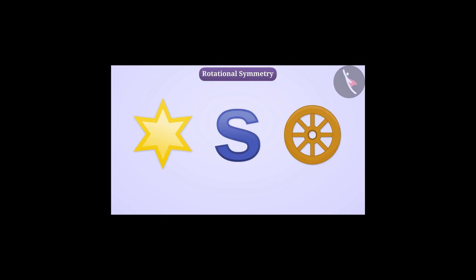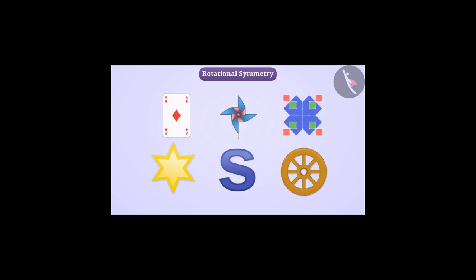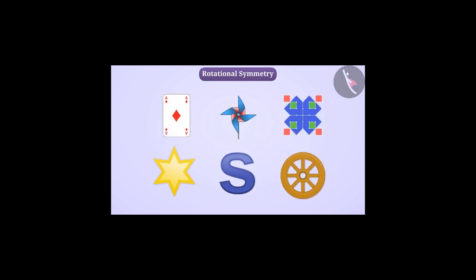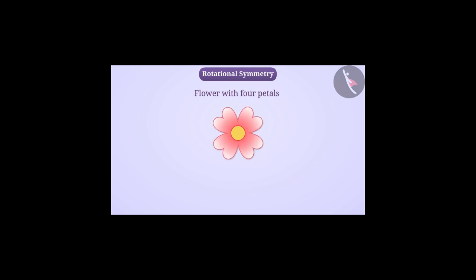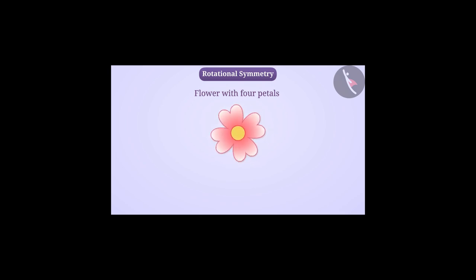We say that such shapes have rotational symmetry. Today we will understand rotational symmetry. Look at this figure — it is a shape of a flower with four petals. We can rotate it around the centre. When an object rotates, we say that it is rotating.